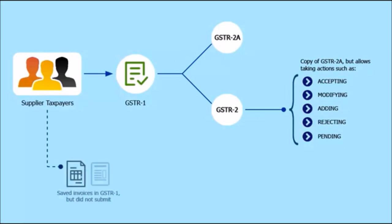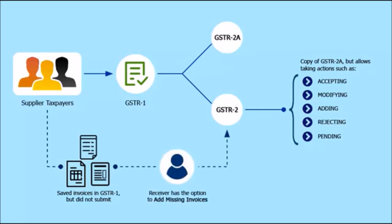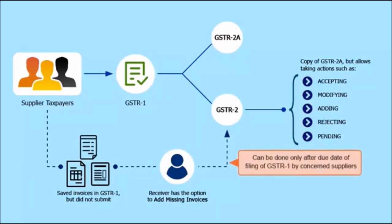If a supplier has saved invoices but has not submitted GSTR-1 yet, the receiver can add those auto-populated saved invoices using the Add Missing Invoice Details option and file GSTR-2. Such actions can be taken only after the due date of filing of GSTR-1 by the concerned suppliers.